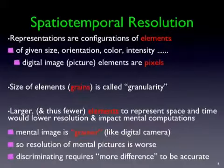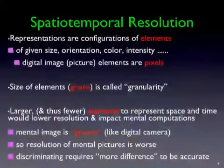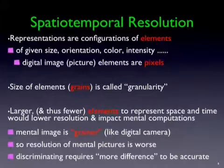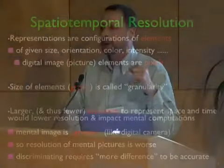If you have larger and therefore fewer grains to make up the same picture, your resolution is lower. Imagine two identical pictures — one from a 1-megapixel camera and one from a 10-megapixel camera. You've got 10 times as many units to make up the same picture. Each tiny one represents a much more focused piece of information than one of those bigger, clumsier ones. If you have fewer and larger of these, your resolution for thinking about space and time will impact the mental computations you can do.